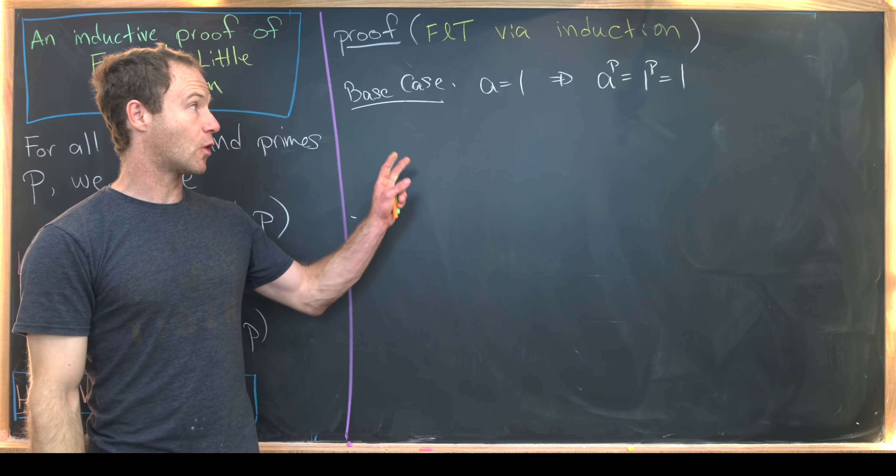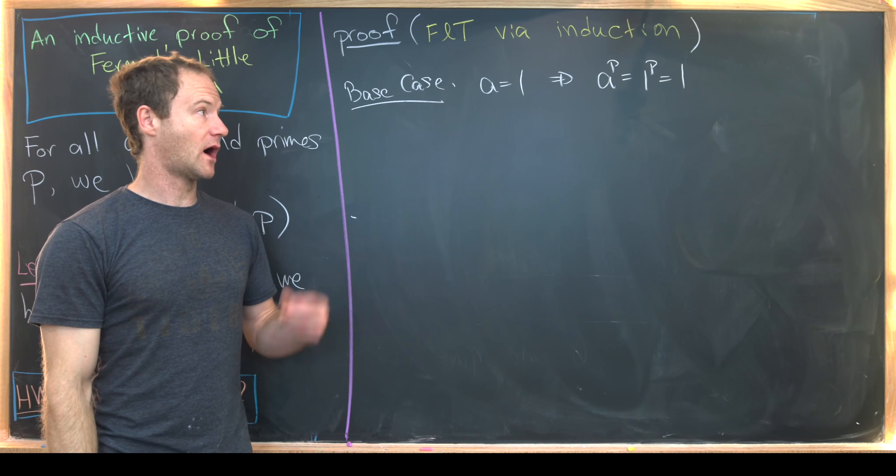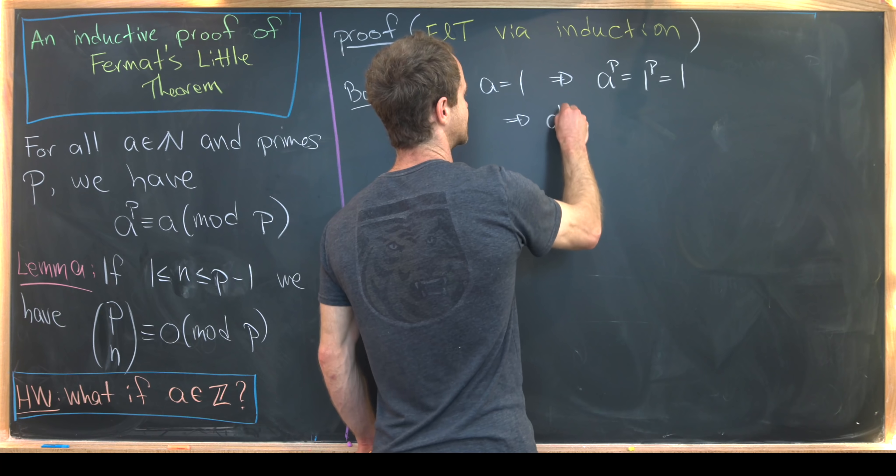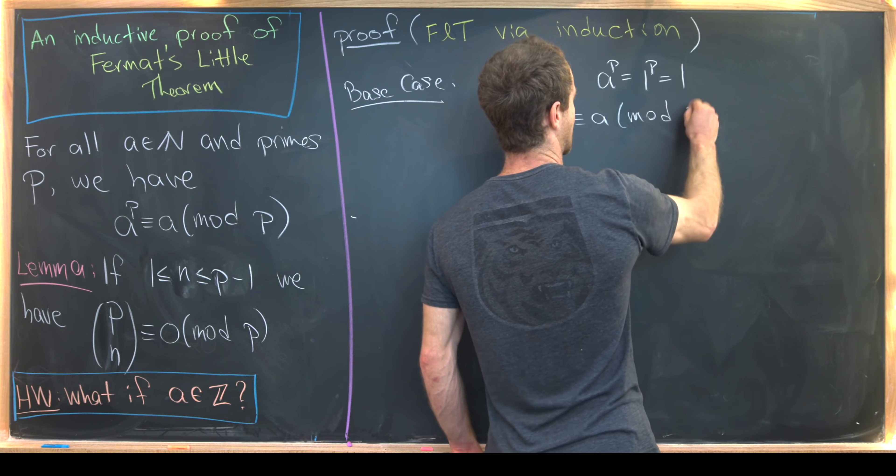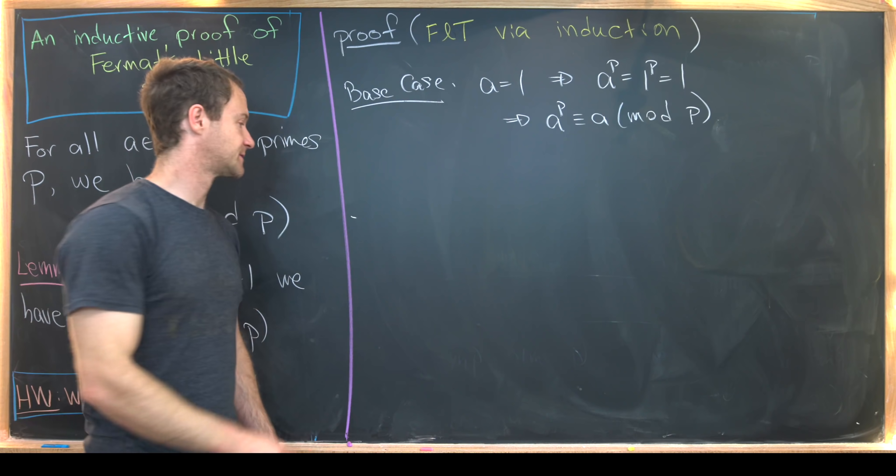But here we have equality between A and A to the P. But equality between A and A to the P clearly implies congruence mod P between A and A to the P. Equality is stronger than congruence.